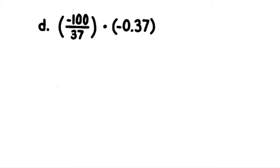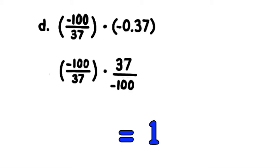Part d: negative 100 over 37 times negative 37 hundredths. Again we can write them both as fractions: negative 100 over 37 times 37 over negative 100. You can already tell that this answer is going to be positive 1, because negative 37 hundred over negative 37 hundred equals positive 1.